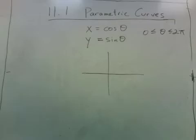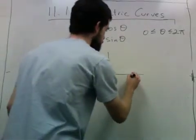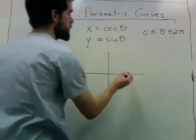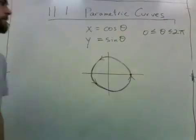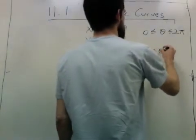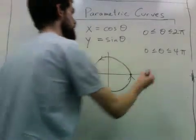And so when theta is 0, x is 1 and y is 0, so we're starting there. And as theta goes from 0 to 2π, we're just tracing out the unit circle. But if theta went from 0 to 4π, we'd be tracing it twice.